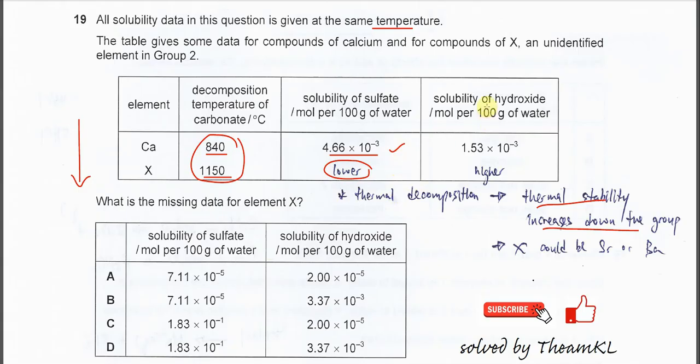The solubility of hydroxide—strontium hydroxide and barium hydroxide—is much higher than calcium hydroxide. So we need to choose the value which is higher than this.